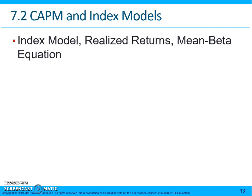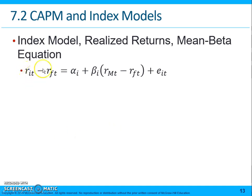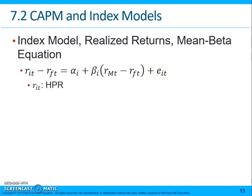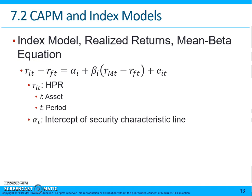The index model is simply the excess return for any security. The return on that security in period T minus the risk-free rate in period T is equal to the alpha for that security, plus the beta for that security, multiplied by the excess return on the market during that period minus the risk-free rate, plus the residual or firm-specific effects in that period. R_IT is the holding period return — I refers to the asset, T refers to the time period — and alpha_I is the intercept of the security characteristic line for that security.